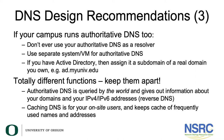If your campus runs authoritative DNS as well, please don't ever use your authoritative DNS as a resolver. Use a separate system or separate virtual machine for the authoritative DNS. In these days of virtual machines it is very inexpensive to set up another container or virtual machine to handle the authoritative DNS and a separate one to handle the caching DNS. The functions of authoritative and caching are completely different, so keep them well apart. The authoritative DNS is queried by the whole world and gives out information about your domains and your v4 and v6 addresses, namely the reverse DNS. Caching DNS is for your end users and keeps a cache of frequently used names and addresses.